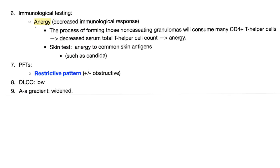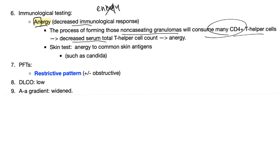Immunological testing reveals anergy — the opposite of energy — meaning decreased immunological response. Why? Because the non-caseating granulomas have consumed all of the CD4 T-helper cells. We don't have any fighters left. This leads to decreased serum total T-helper cell count, because all of them are hiding in the granuloma, not in the blood where they should be. A skin test will show decreased reaction to common antigens such as candida.